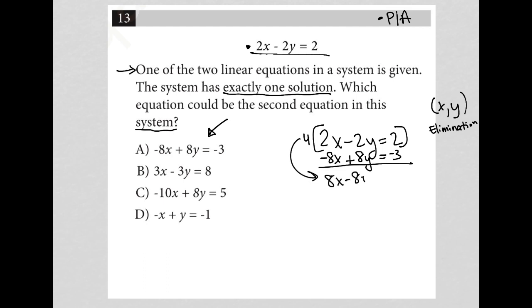My second equation would remain negative 8x plus 8y equals negative 3. Now we can very quickly see that both x and y cross out, leaving me with 0 equals 5. This is a situation which we would say there is no solution, right? So not exactly one solution, but no solution. So choice A is gone.